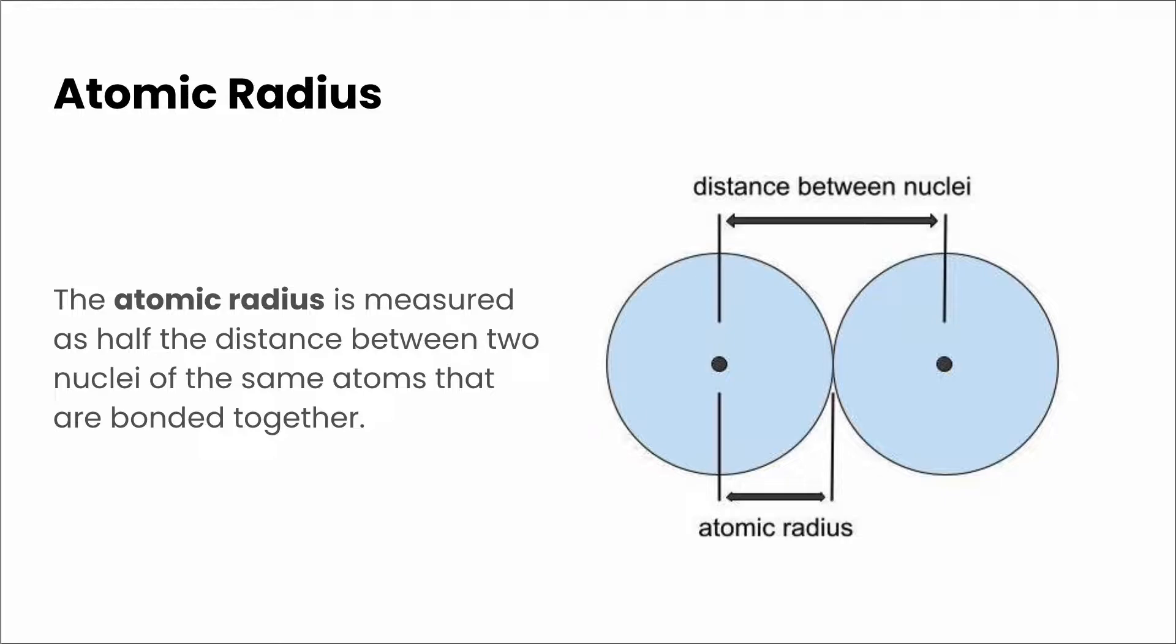The reason why we do this is because our atomic model makes it pretty unfeasible to measure the distance from the center of the atom to the edge of its electron cloud because we don't actually know where that edge is for sure. So this is the definition that we're working from for atomic radius.